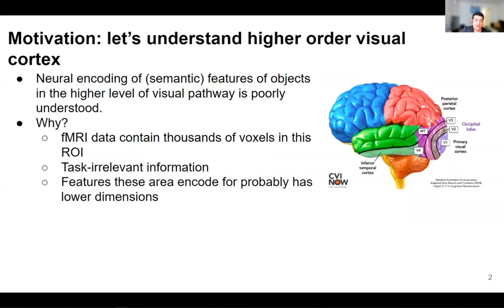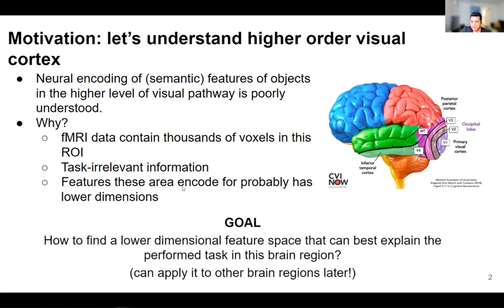These features contain task-relevant information, and in addition to that, the dimensionality of the feature space that these regions encode for is probably much lower than thousands of features. So one goal is how to find a lower-dimensional representation that can best explain performed tasks in the brain region.